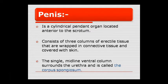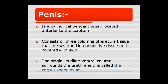The penis is a cylindrical pendant organ. It is composed of three columns of erectile tissue and connective tissue. There is a single midline ventral column which contains the urethra, and this is called the corpus spongiosum.